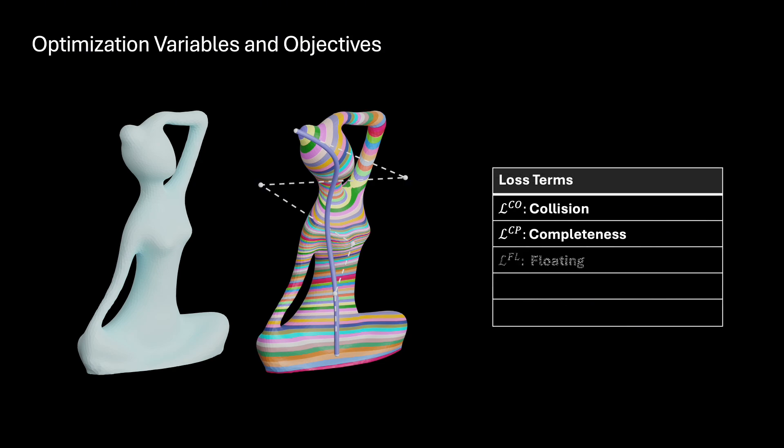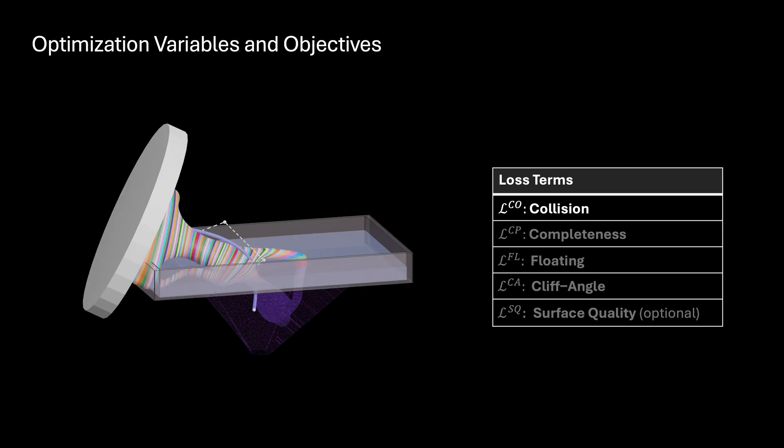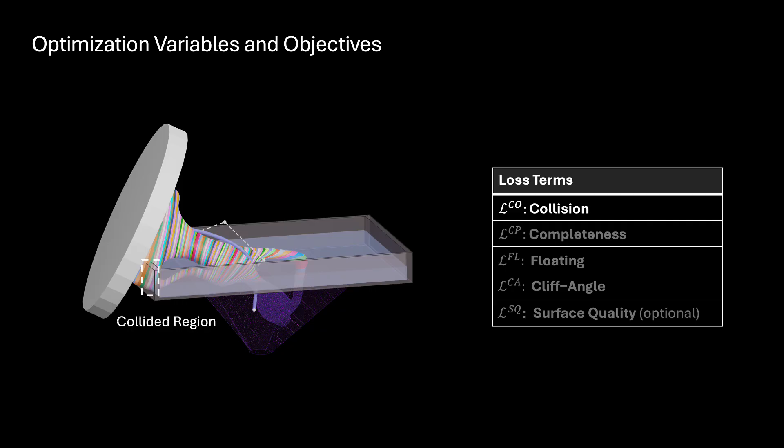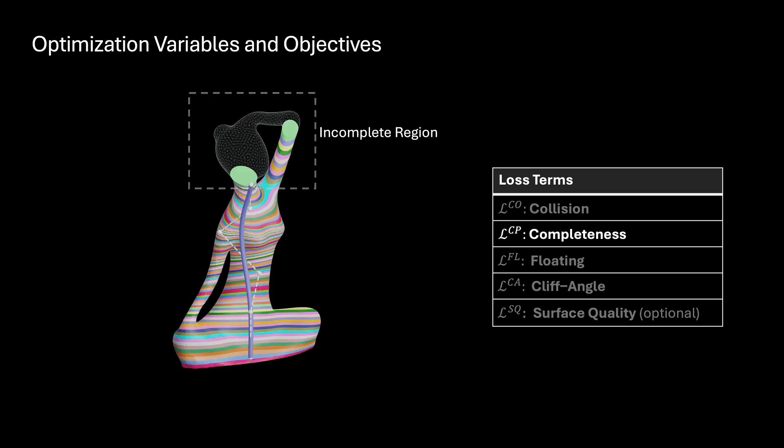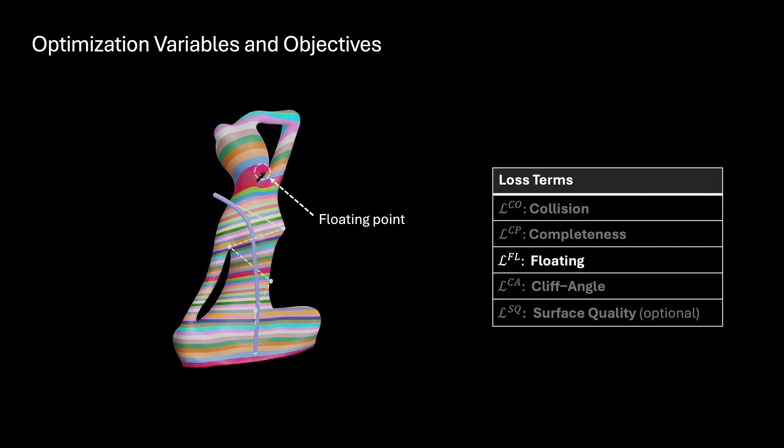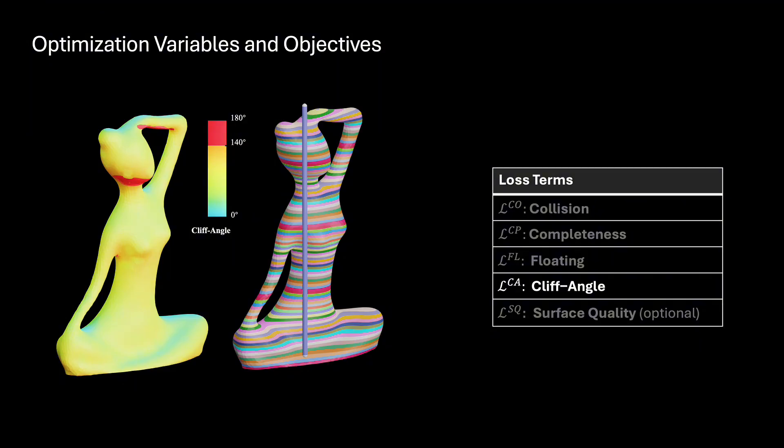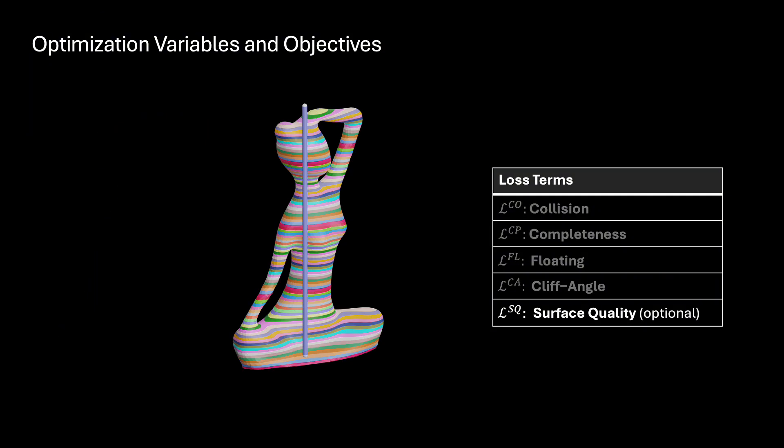To enable the support-free printing of freeform models while improving the quality of printout, loss functions are defined according to collision avoidance, completeness, floating point elimination, cliff angle reduction, and surface quality.